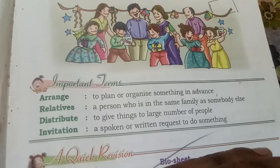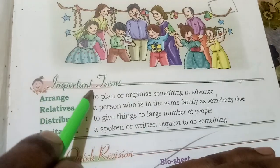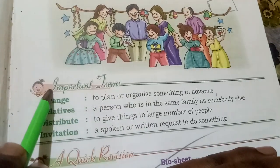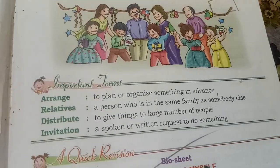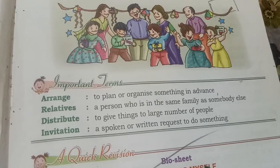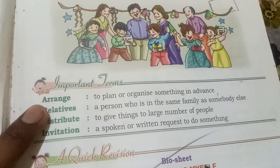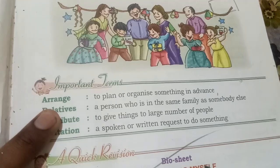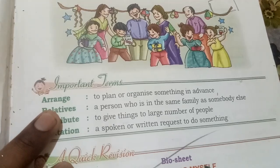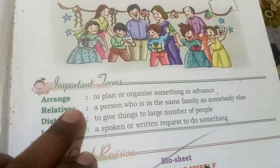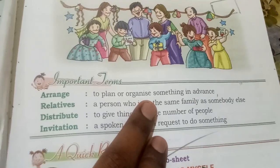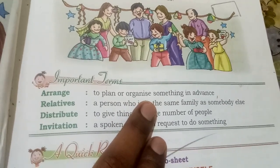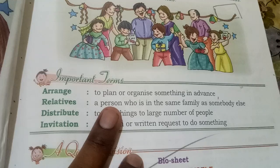Now it's time to learn some important terms. First is 'arrange' — arrange ka matlab kya hota hai? To plan or organize something in advance. Preliminary terms, yani pehle se kisi cheez ki tayyari karke rakhna.